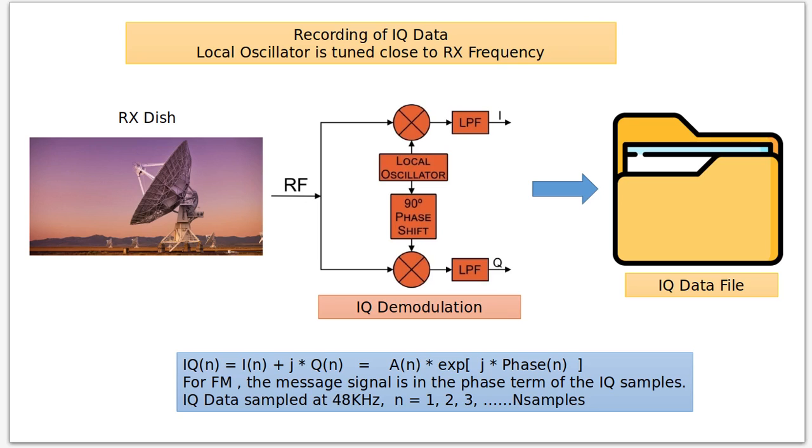So what we'll be doing is we'll be recording the RF from our satellite dish pointing up into space. The RF will then go through what's called an IQ demodulator, and then we will record that IQ file to a data file.